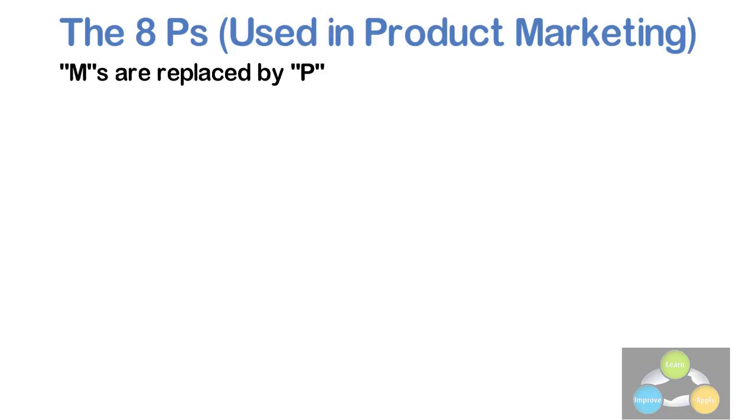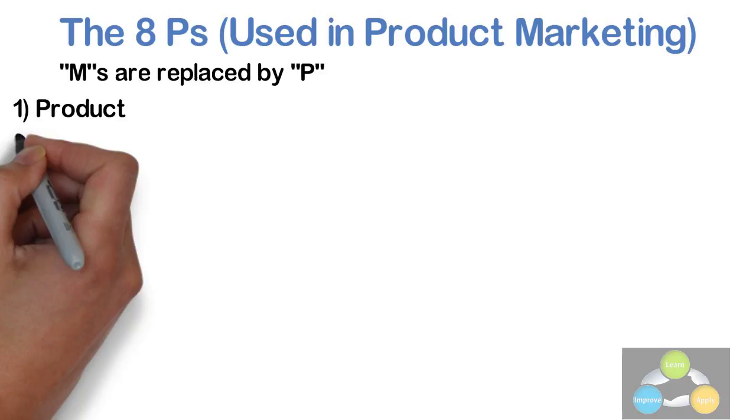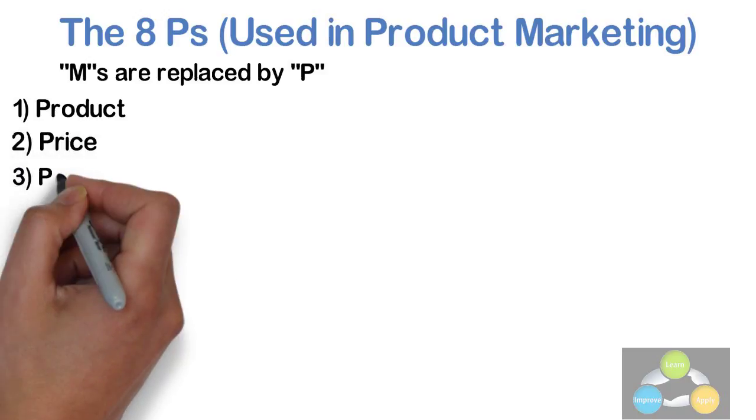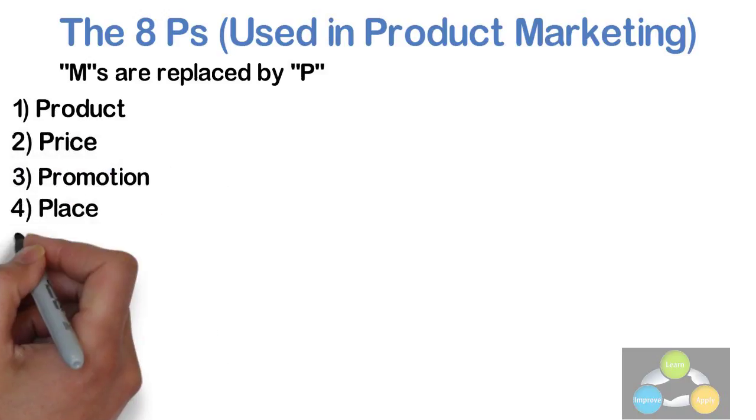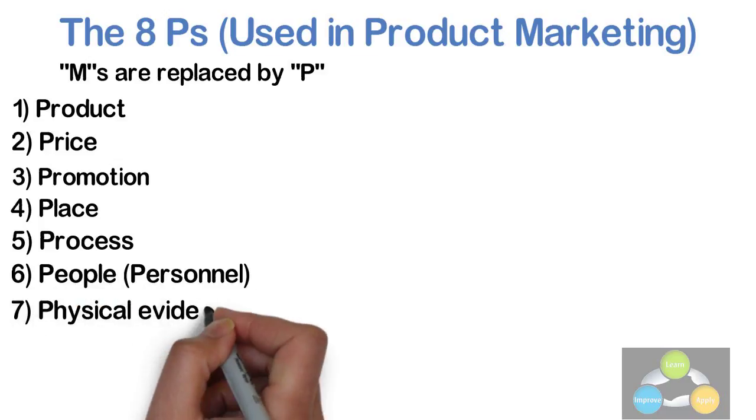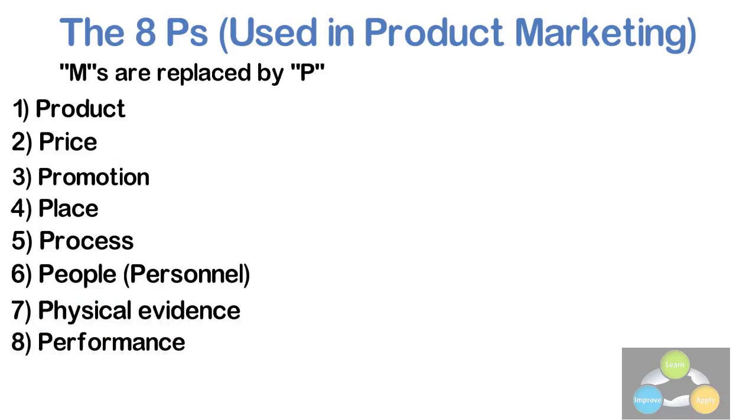It adds categories for the Ishikawa diagram as Product, Price, Promotion, Place, Process, People, Physical Evidence, and Performance. The 8 P's are primarily used in product marketing.